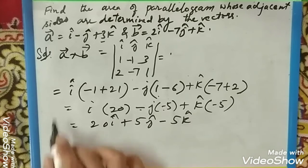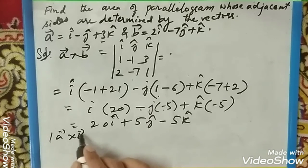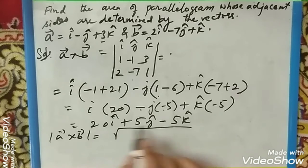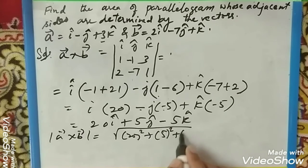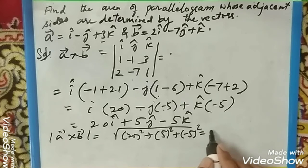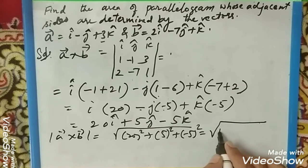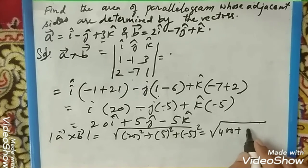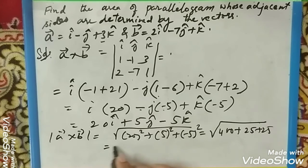Now to find the area we have to take the modulus of a cross b. That will be the square root of 22² + 5² + (-5)². 22² is 484, wait, 20² is 400 plus 25 plus 25, which equals 450.